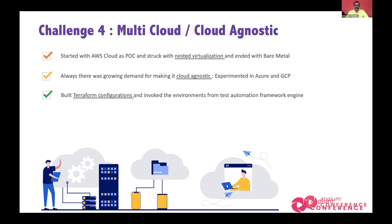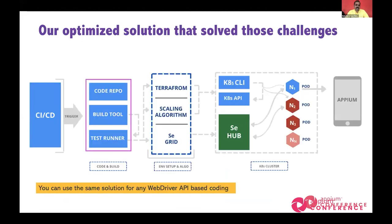We took a step back and started building Terraform configurations, which let you spin up cloud machines in any cloud. You configure that environment with keys and spin it up in three to five minutes. The execution is triggered from your test automation framework engine — whether you're using Selenium WebDriver or Appium — so you can scale up your environment at startup, from your test runners like Mocha, TestNG, or JUnit.